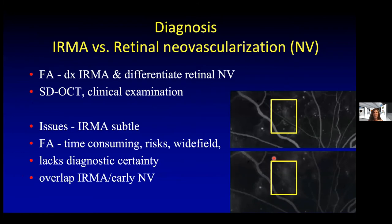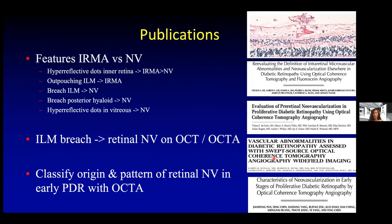How have we been differentiating between IRMA and retinal neovascularization? Typically, we do fluorescein angiography, and we also use features on clinical examination and spectral domain OCT. Some issues with current differentiation methods are that IRMA can be very subtle, fluorescein angiography is time-consuming with risks, and there are times when IRMA can leak a little bit on fluorescein angiography — it doesn't leak as much as well-developed retinal neovascularization, but there are stages, making differentiation difficult and sometimes showing overlap.